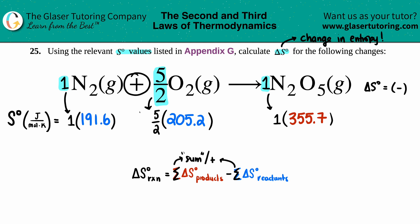Now I have to sum the sides up. There's a plus sign for the reactants, so I add those two S values together. There's only one product, so the product side stays the same at 355.7. Let's find the reactant side: 5/2 times 205.2 plus 191.6 totals 704.6.